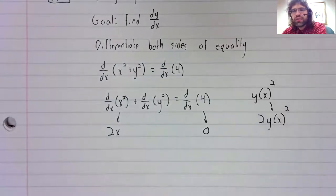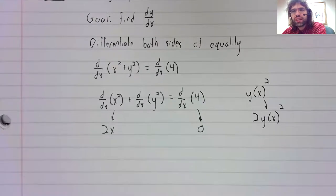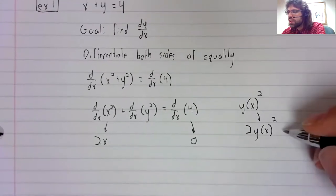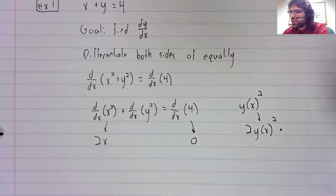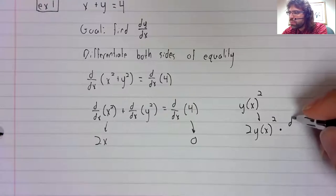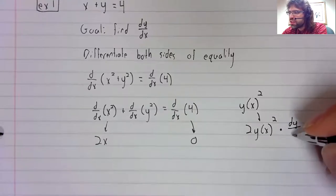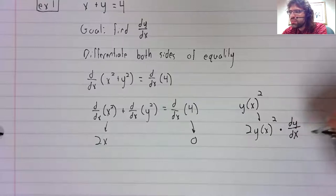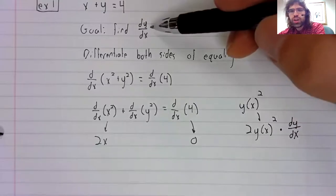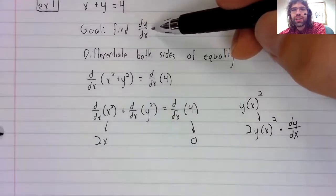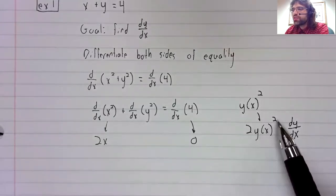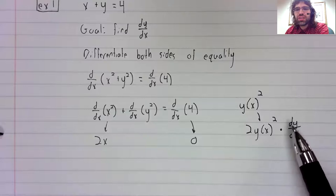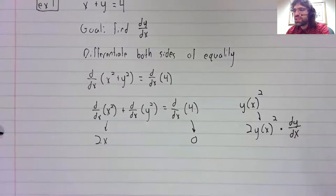With the inside function stuck inside of it, times the derivative of the inside function. But what is the derivative of the inside function? We don't know. That's exactly what we're trying to find out. So two times y times this derivative, whatever this derivative might be.